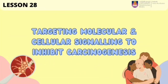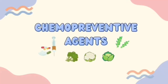Hello everyone. In our presentation today, we will talk about targeting molecular and cellular signaling to inhibit carcinogenesis. Several significant progress has been made in targeting some molecular and cellular pathways to help prevent or treat different cancers, some of them by using chemopreventive agents.